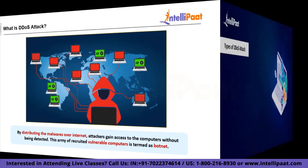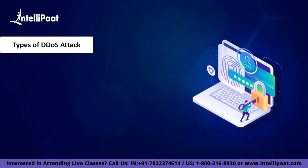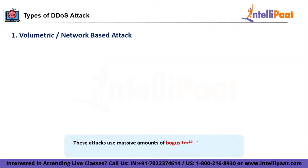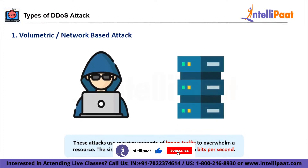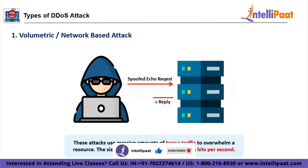Now that we understand what DDoS is and what it is aimed at, let's look into its different types. The first type is a volume-based or network-based attack. These attacks use massive amounts of bogus traffic to overwhelm a resource such as a website or server. Examples include ICMP, UDP, and spoofed packet flood attacks. The size of volume-based attacks is measured in bits per second, and they focus on clogging all available bandwidth for the server, cutting the supply short. Multiple requests are sent to the server, all of which warrant a reply, denying access to legitimate users.